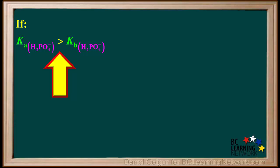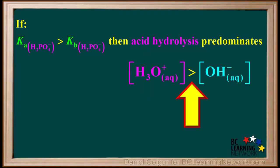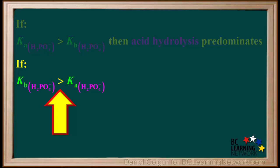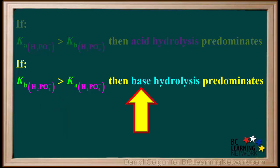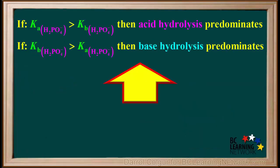We can summarize by saying: if the Ka for an amphiprotic anion is greater than the Kb for the same ion, then acid hydrolysis will predominate and the concentration of H3O+ will be greater than the concentration of OH-. If Kb for an amphiprotic anion is greater than the Ka for the same ion, then base hydrolysis will predominate and the concentration of OH- will be greater than the concentration of H3O+. It is important to remember: if Ka is larger than Kb, then acid hydrolysis predominates; and if Kb is larger than Ka, then base hydrolysis predominates.